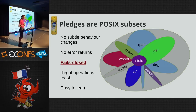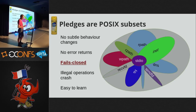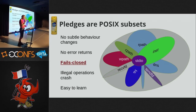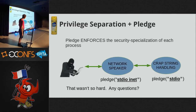These are POSIX subsets - I think that's very important for people to understand. When you pledge a program, there are no behavior changes except that the parts you said you wouldn't use are inaccessible. There are no error returns from functions you're not allowed to call. If you use a piece of Unix which you said you weren't going to use, your process is killed. This stuff fails closed. This is easy for developers to learn - they don't have to go through their code and find places where they didn't check an error return. By not having error returns, we don't create new failure conditions.